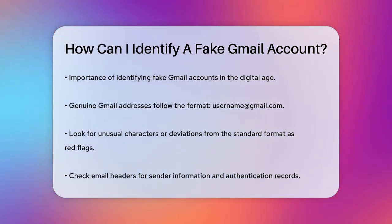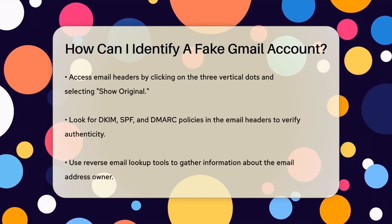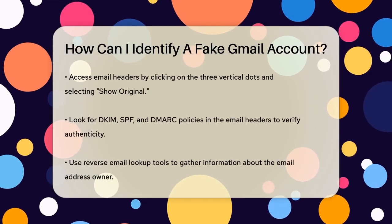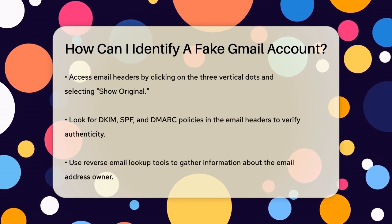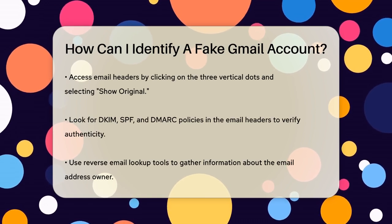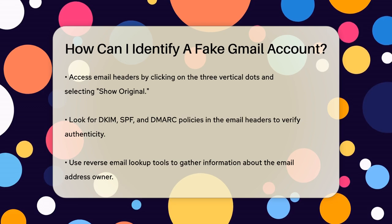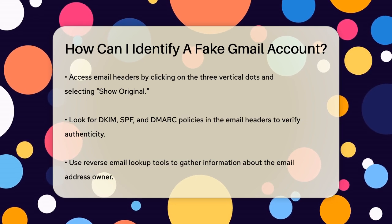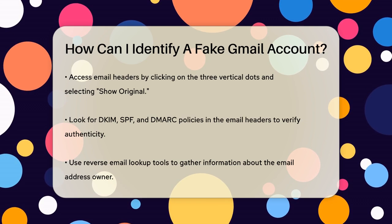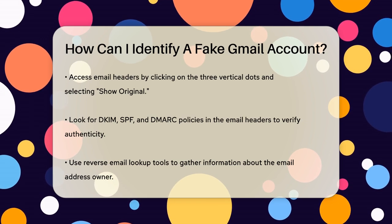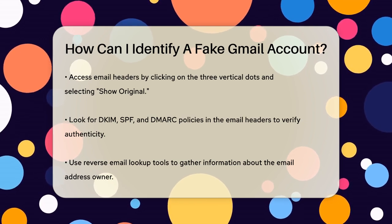Next, check the email headers. This can give you a lot of information about the sender. To view the email headers in Gmail, open the email, click on the three vertical dots at the top right corner, and select Show Original. Look for domain authentication records like DKIM, SPF, and DMARC policies. These help authenticate emails from legitimate sources.